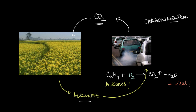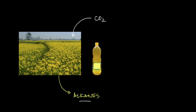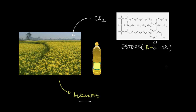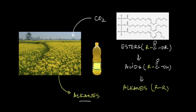It turns out that vegetable oils like mustard oil or soybean oil are made up of triacylglycerols, which are a form of esters. They have a long carbon chain connected to an ester group. These esters can be easily converted into acids simply by adding water, and these acids can then be converted into alkanes via a process known as Kolbe's electrolysis.